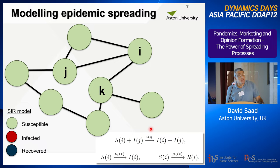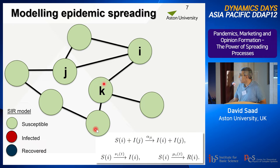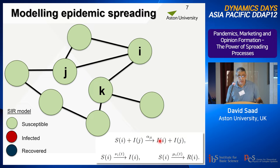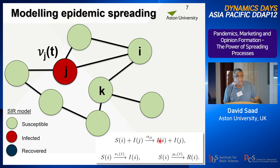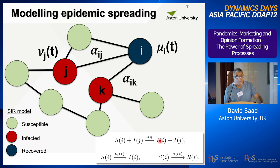How do we model epidemic spreading? One of the most popular models is called the SIR model, in which each node can be in one of three states: susceptible, infected, or recovered. There is some probability alpha_ij that if your neighbor is infected, you have a probability of being infected as well. These probabilities — alpha for probability of being infected while susceptible, and the probability of recovery — are the main variables we use in our model. A node becomes infected with probability nu_jt, it infects another node with probabilities alpha_ij and alpha_ik, and then one of them becomes recovered, and so on.